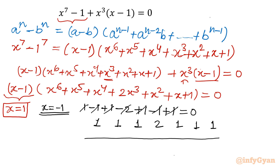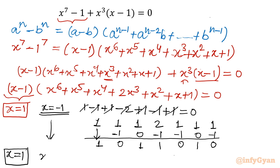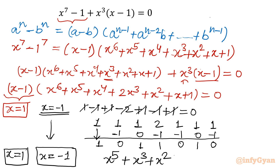I will write all the coefficients of the hexic equation to apply synthetic division and find the degree 5 polynomial. Leading coefficient as it is: 1. Negative 1 times 1 gives negative 1, then 0; negative 1 times 0 gives 0, then 1. Our equation reduces — x equal to plus 1 is one solution, and x equal to minus 1 reduces the degree by 1. The equation becomes quintic with two solutions: 1 and minus 1.